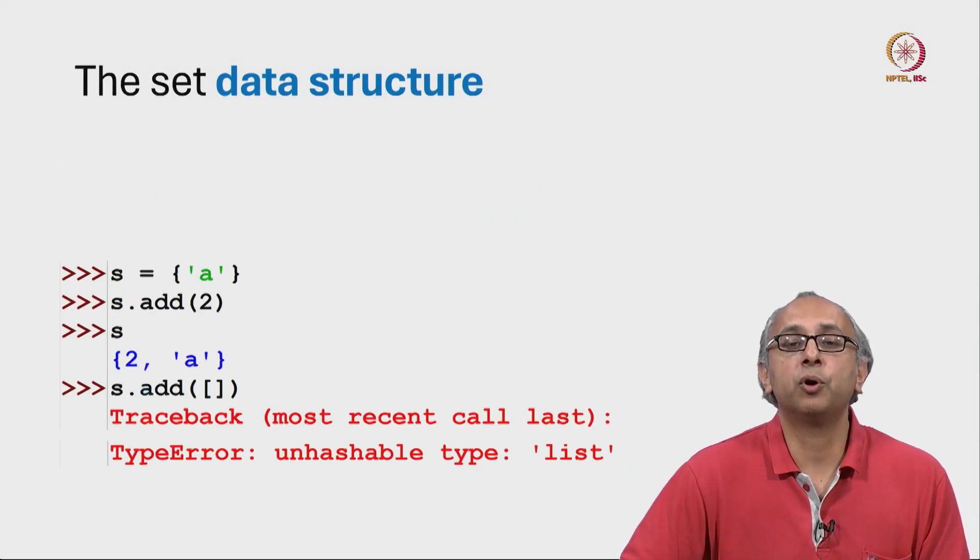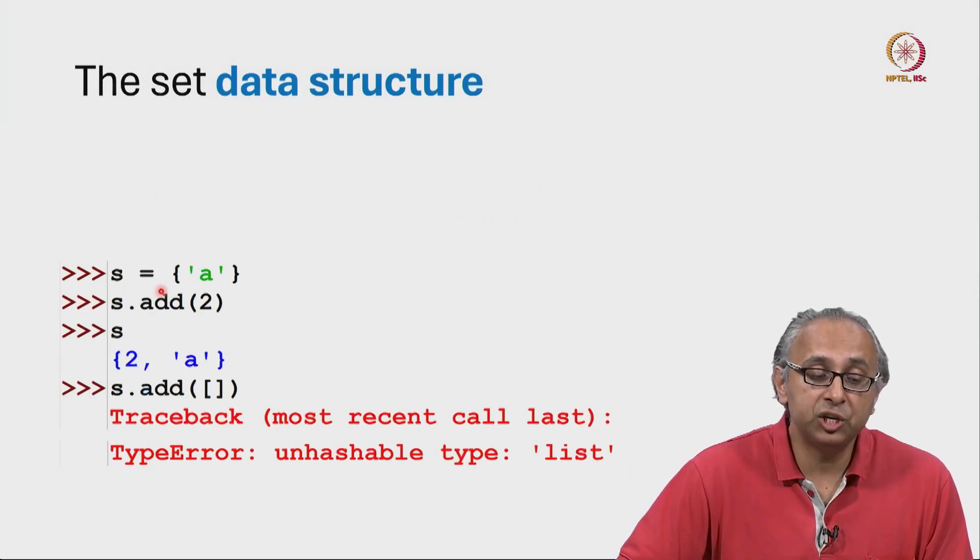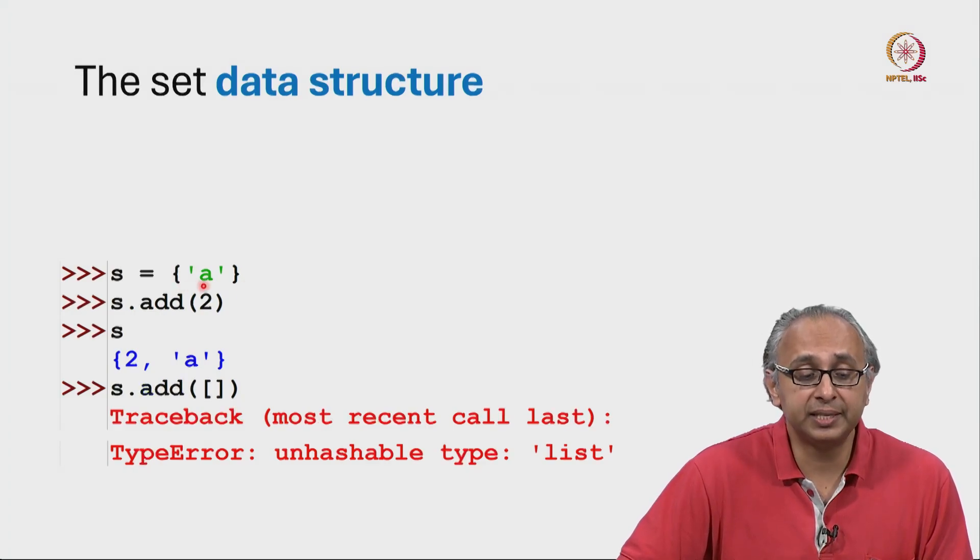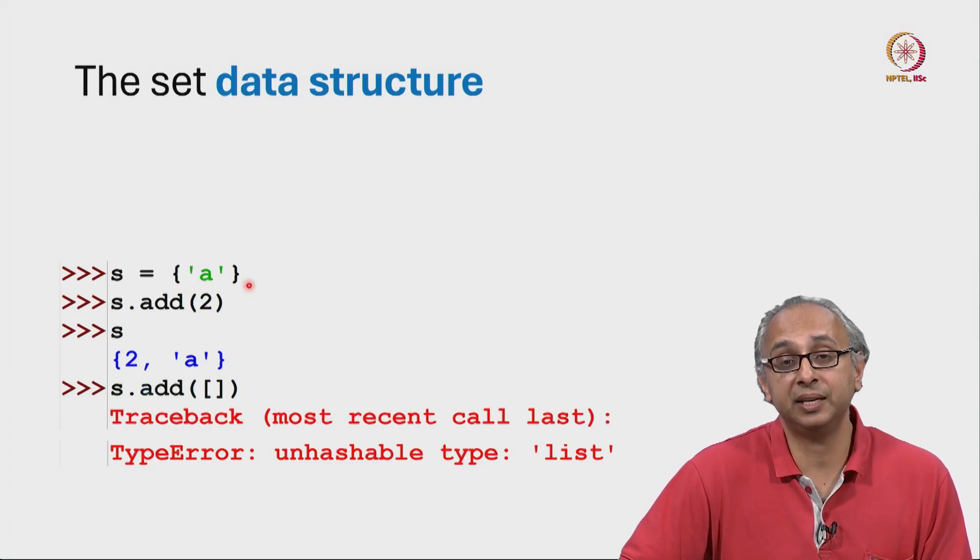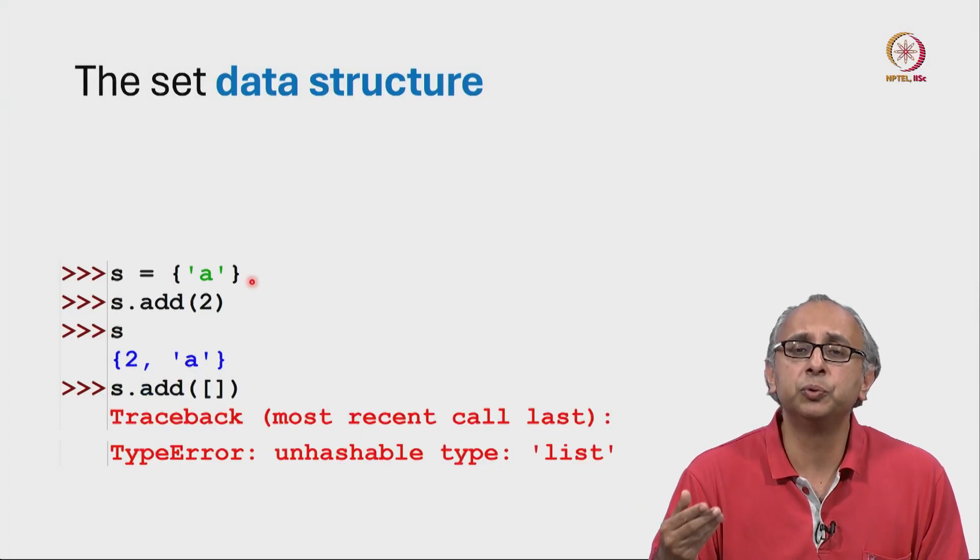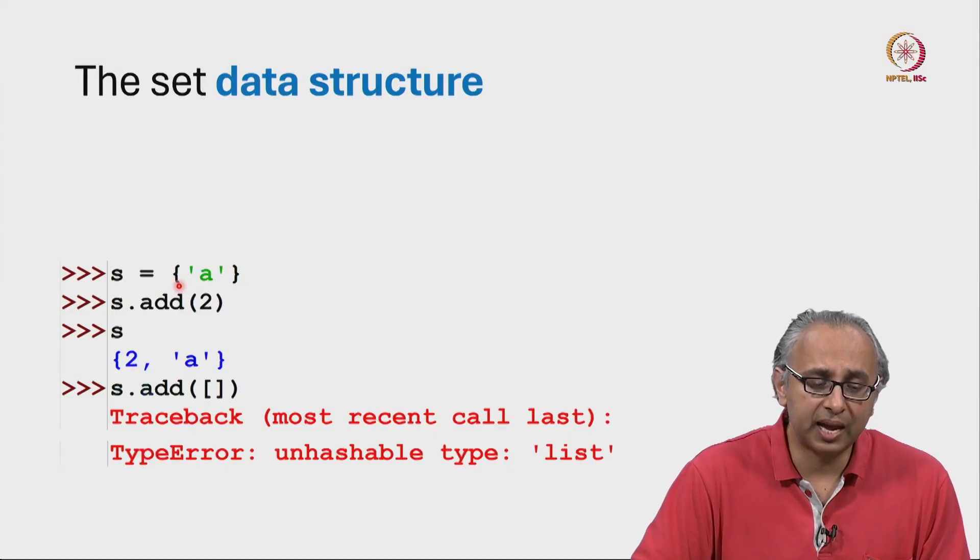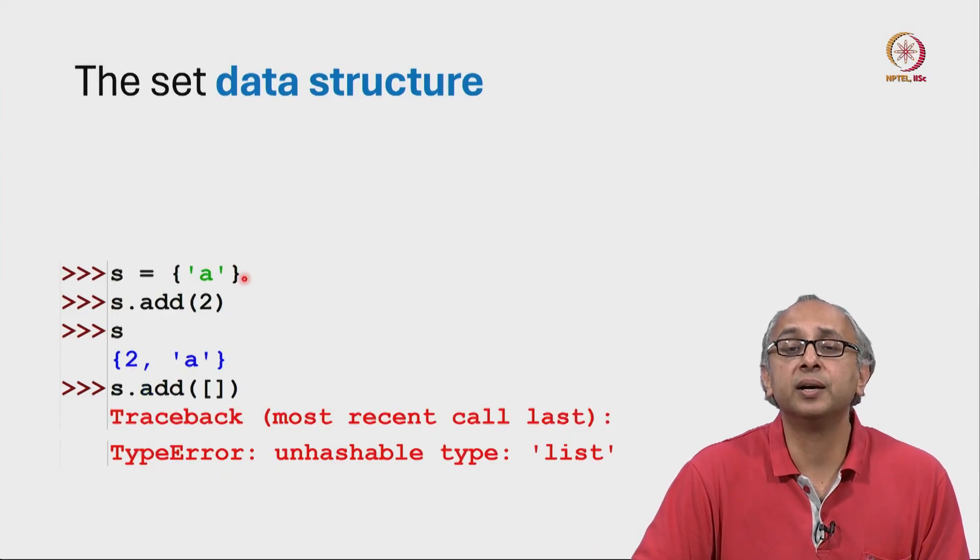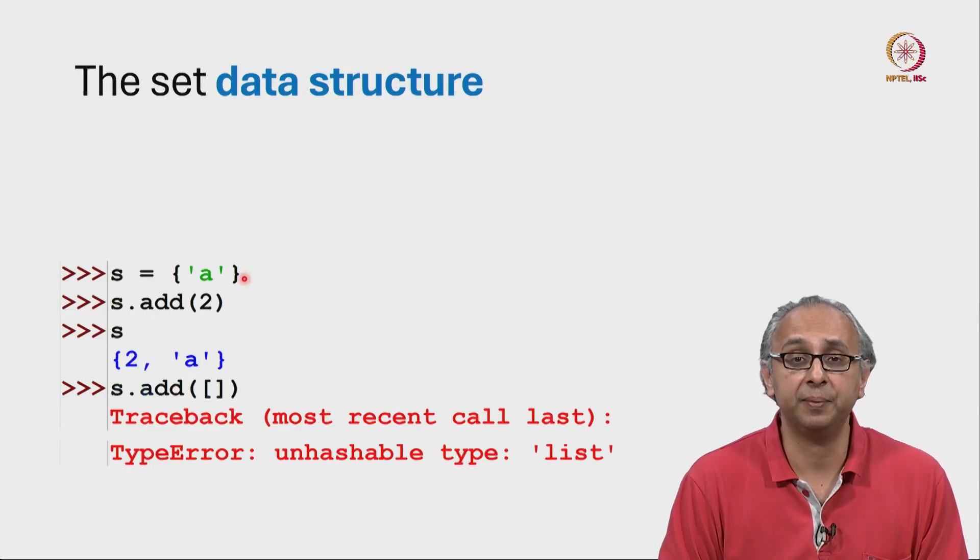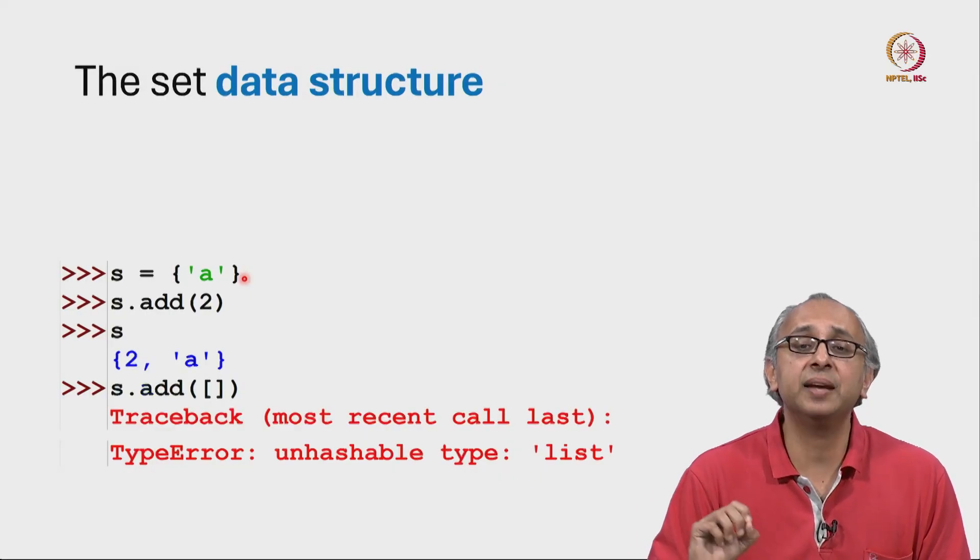Here are some more operations on sets. I can initialize a set to contain 0 or more items by just listing them inside curly brackets. If I have multiple items, I can just put a comma in between them similar to lists. In this case, I am initializing S to be a singleton set containing just the string A. Now if I want to add more items to this, I can do so. I can say S dot add. In this case, I am adding a 2.